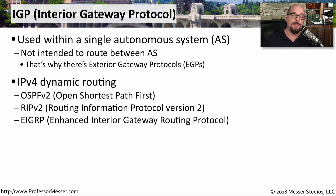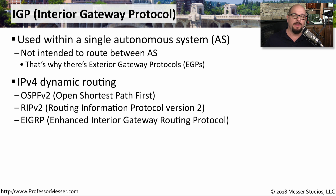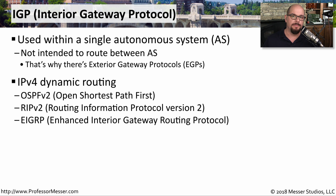There are a number of popular internal gateway protocols you might see used with IP version 4. One is OSPF version 2, that stands for Open Shortest Path First. There's also Routing Information Protocol version 2, or RIPv2. And for Cisco networks, you might commonly see EIGRP, or Enhanced Interior Gateway Routing Protocol.